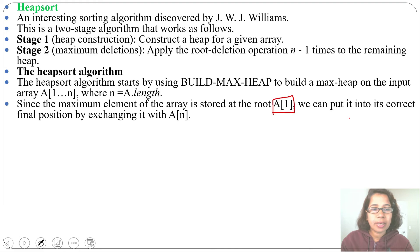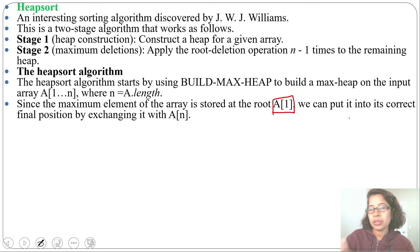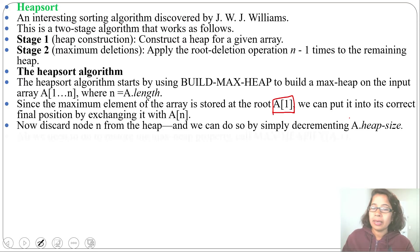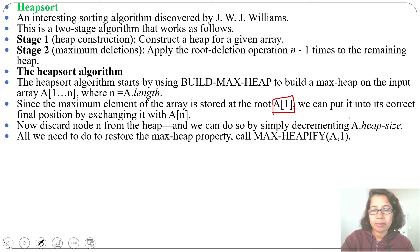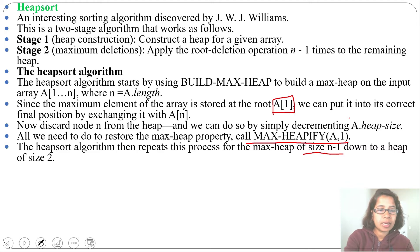we can put it into its correct final position by exchanging it with the last element A[n]. Then we decrease the heap size, discarding the last element. Next, we need to restore the MaxHeap property by calling MaxHeapify on A[1]. This HeapSort process repeats for a MaxHeap of size n minus 1 down to a heap size of 2.